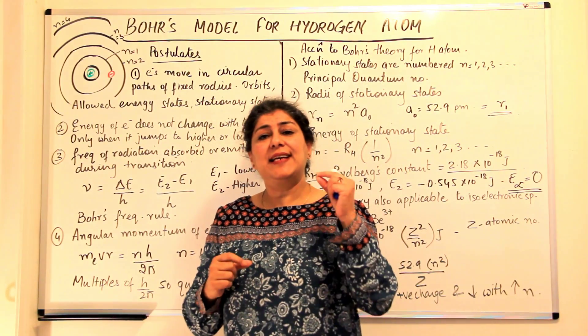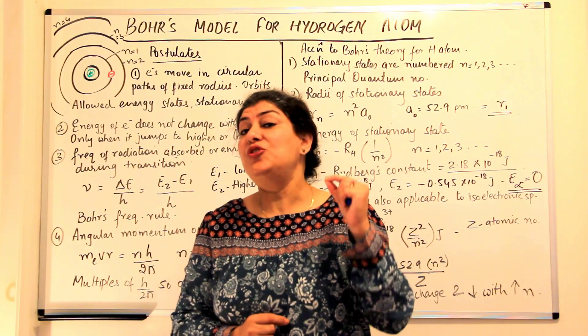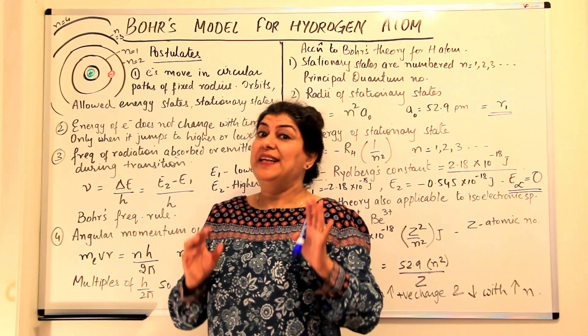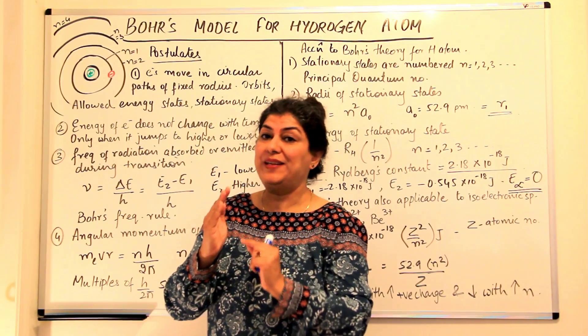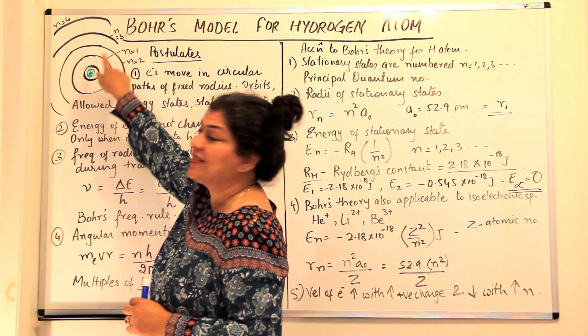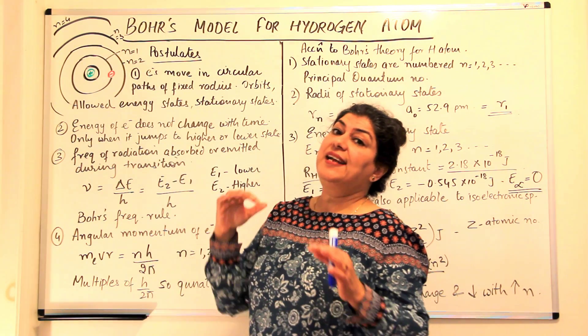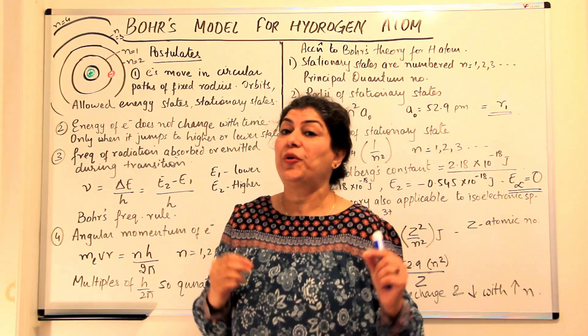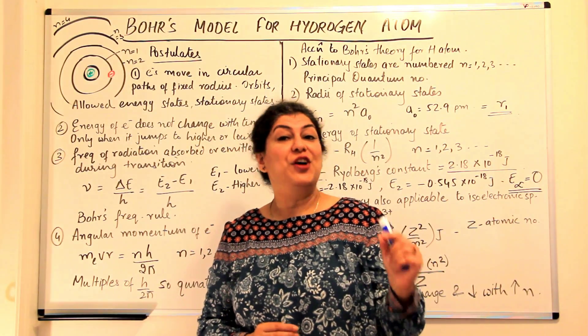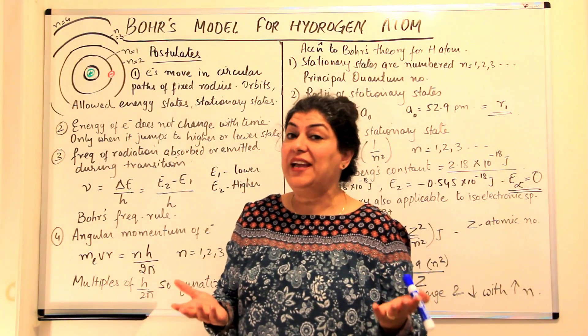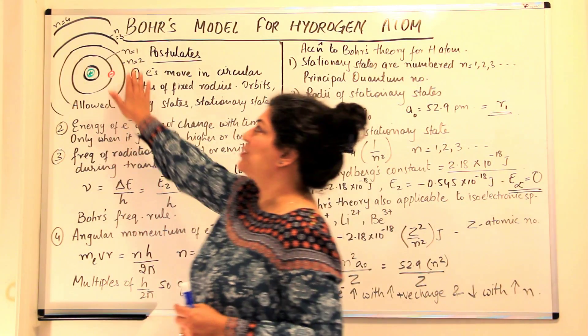Bohr said that the electrons, they do not revolve around the nucleus randomly or anywhere. They have fixed orbits. There is the existence of fixed orbits, which are like concentric circles around the nucleus. And as long as the electron is revolving in this fixed orbit, it neither loses nor gains energy. And if it does not lose or gain energy, then obviously that explains the stability.